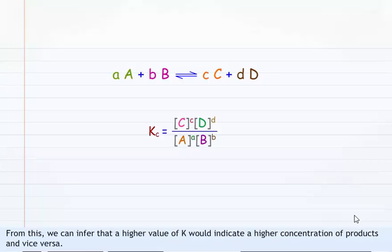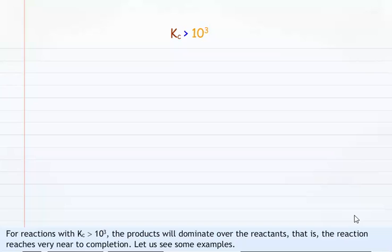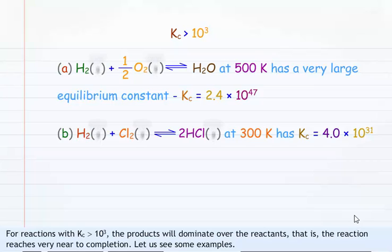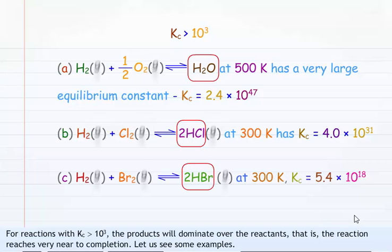A higher value of K would indicate a higher concentration of products and vice versa. For reactions with KC greater than 10 raised to 3, the products will dominate over the reactants — that is, the reaction reaches very near to completion. For example, H2 plus half O2 giving H2O at 500 Kelvin has KC equals 2.4 into 10 raised to 47. H2 plus Cl2 giving 2HCl at 300 Kelvin has KC equals 4.0 into 10 raised to 31. H2 plus Br2 giving 2HBr at 300 Kelvin has KC equals 5.4 into 10 raised to 18.